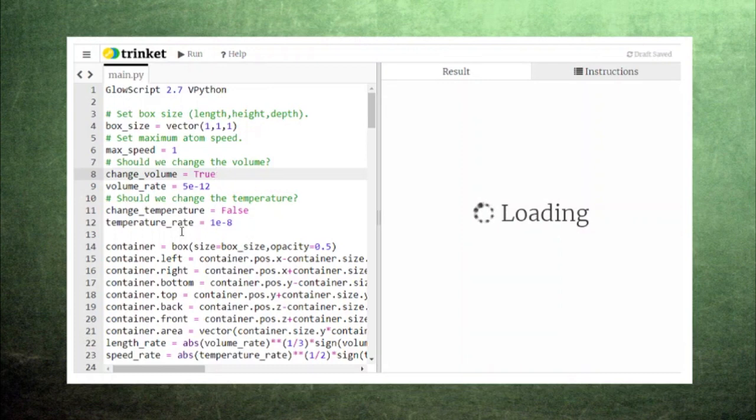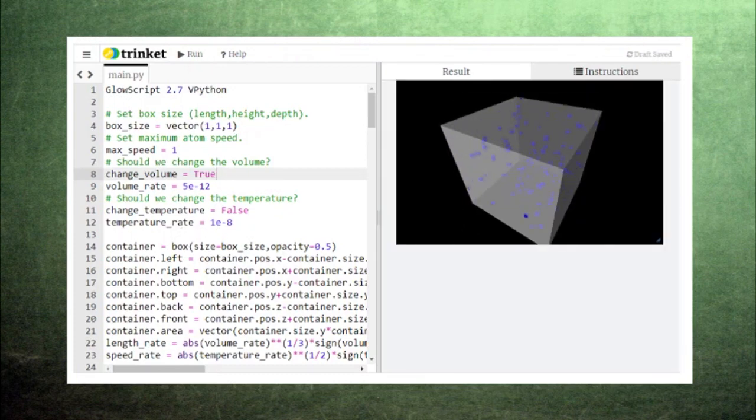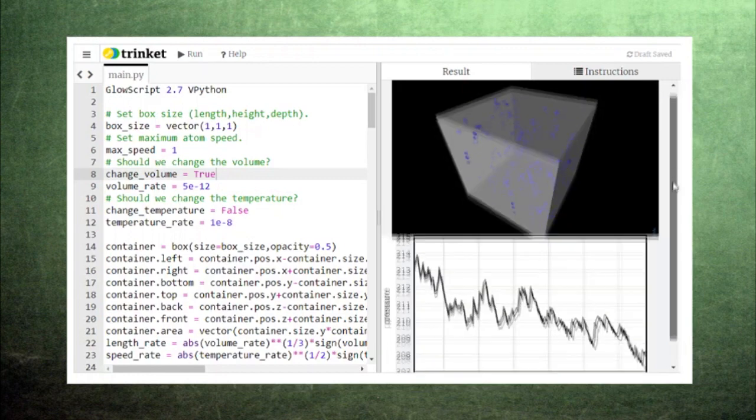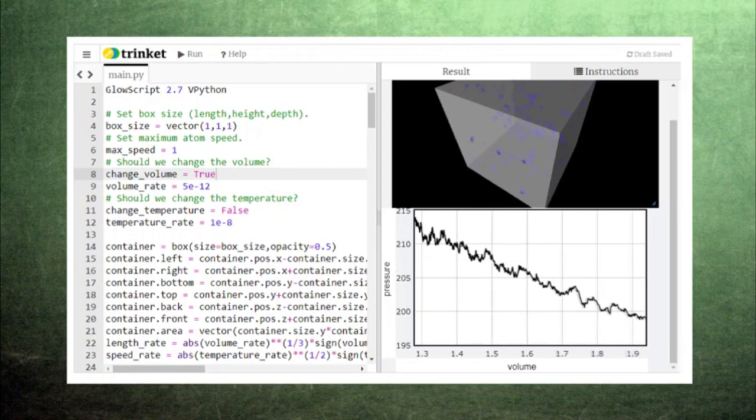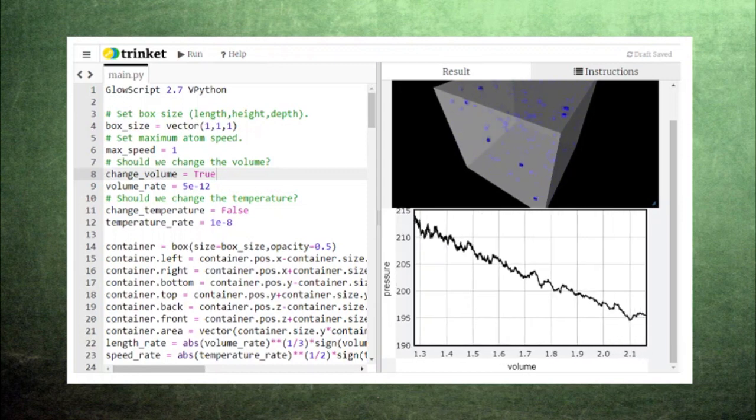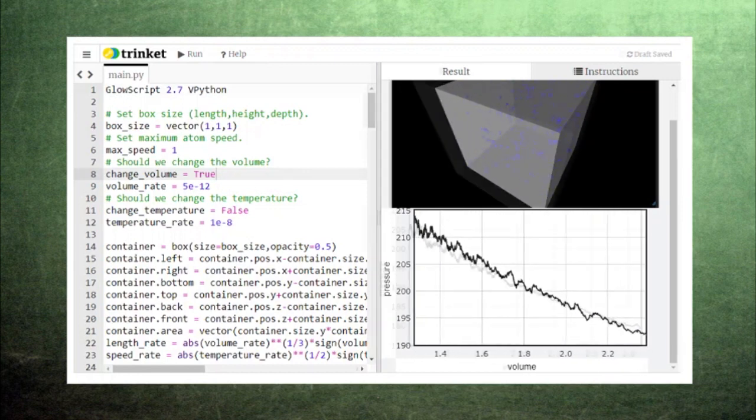Let's take a look at what happens when we increase the box's size. You can see in the animation that there is a longer period of time between collisions with the walls, which should make the pressure decrease. Sure enough, our graph of pressure versus volume shows a general decrease following the general rule of the ideal gas law.